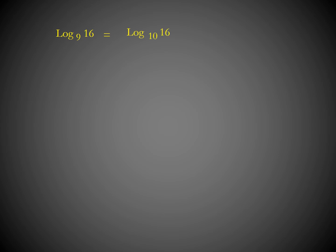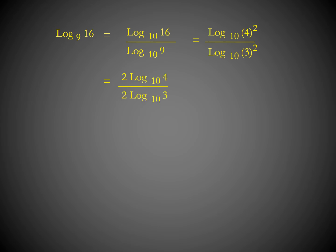For log 16 to the base 9: this becomes log 16 base 10 divided by log 9 base 10. We write it as log 4² base 10 divided by log 3² base 10, giving 2 log 4 base 10 divided by 2 log 3 base 10. The 2s cancel, leaving log 4 base 10 divided by log 3 base 10. For log 10 to the base 4: this is log 10 base 10 divided by log 4 base 10, which equals 1 divided by log 4 base 10.